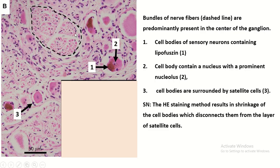This dotted line area is the nerve bundle, and this is the cell body of the sensory neuron. You can see the nucleus with prominent nucleolus, lipofuscin granules, and this is the satellite cell.